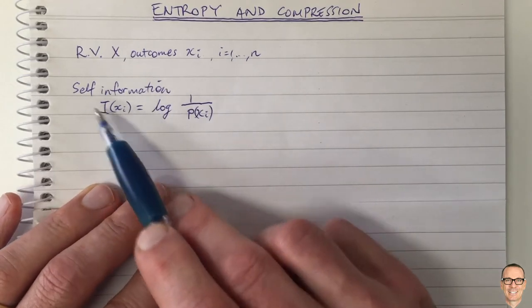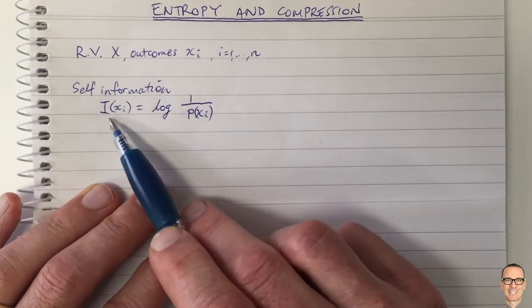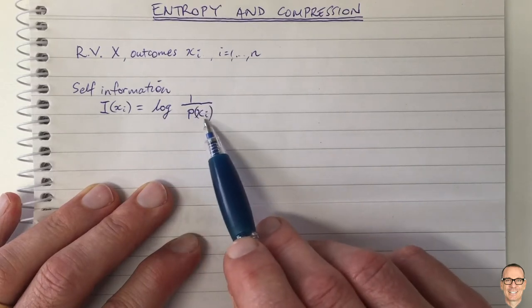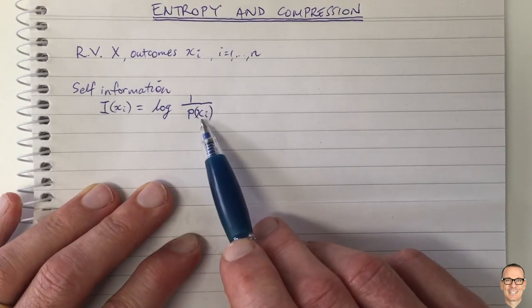Well let's think of a random variable x that has outcomes little xi and there's n possible outcomes. Well there's a concept of self-information which is defined as being log of the inverse of the probability of that outcome.